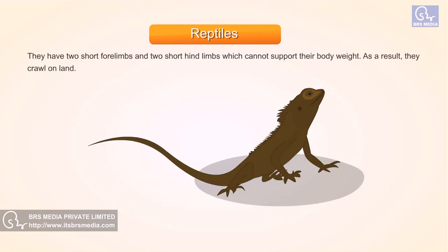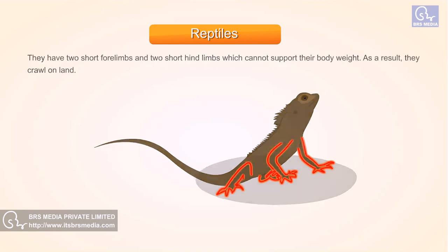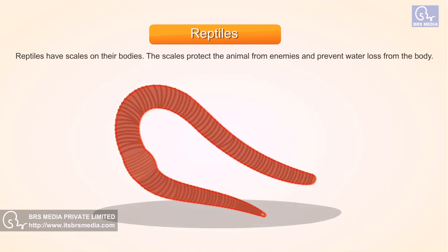Reptiles have two short forelimbs and two short hind limbs which cannot support their body weight. As a result, they crawl on land. Reptiles have scales on their bodies which protect them from enemies and prevent water loss from the body.